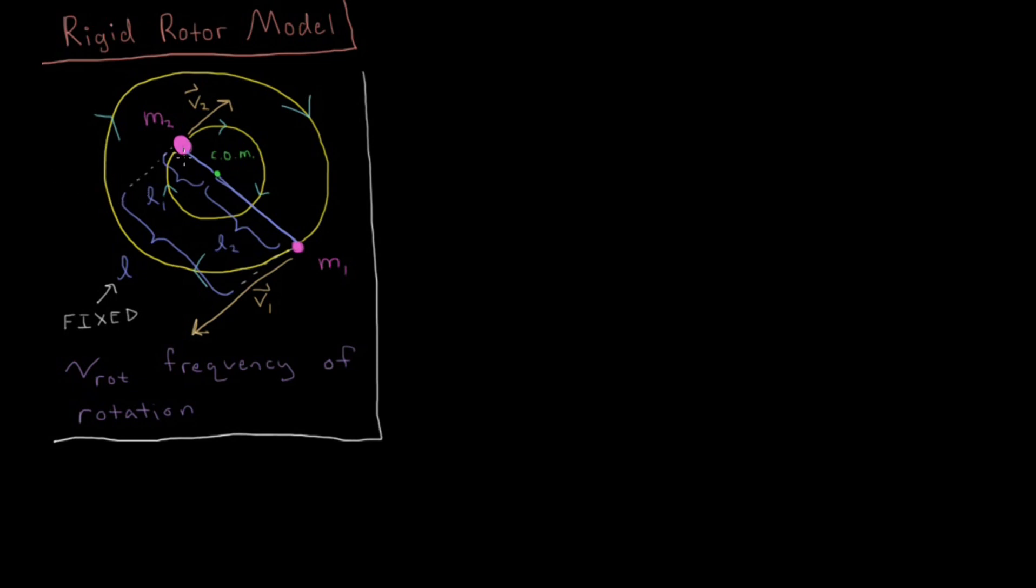In this model system we've got two atoms, each with their own mass, M1 and M2. In this model I've drawn it such that M2 is greater than M1 by having this larger mass and thus the larger sphere here. Each of these is going to be rotating around some common center of mass.